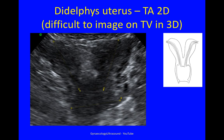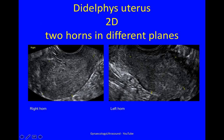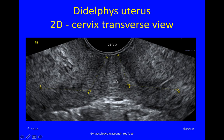A uterus didelphus is very difficult to image on 3D because it has two uterine horns often in different planes, a little bit like bunny ears. On 2D transvaginal scanning you will see two horns in different planes — this is the right horn and this is the left horn. Try to look at the cervix because in the transverse plane you can see each endometrial cavity going through its own cervical canal. This could be two separate cervices or two canals in one body.